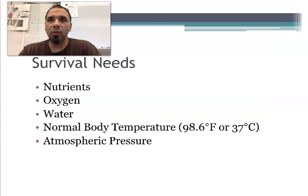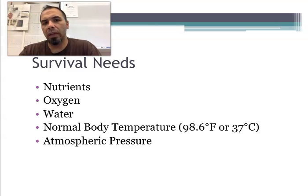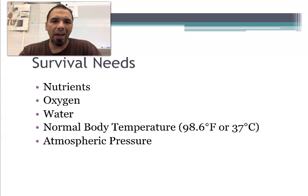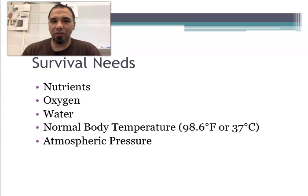So, survival needs — what you need to survive. You need to be able to take in nutrients, you need to be able to eat. Those nutrients become the building blocks of your body. Oxygen is important for you to get energy from cellular respiration. Water — chemical reactions occur in water, water is important for metabolism. You've got your normal body temperature: 98.6 degrees Fahrenheit, 37 degrees Celsius.